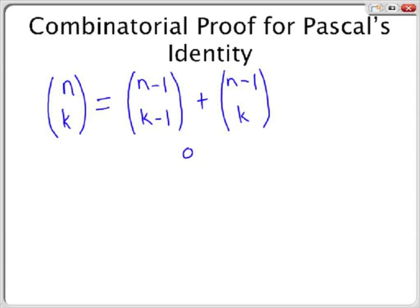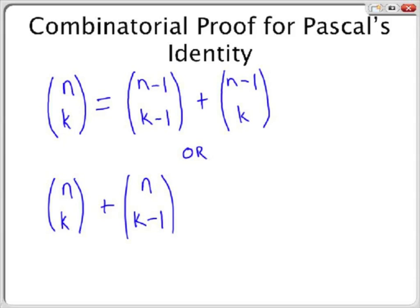Thus, we can conclude the number of ways to get a k-subset from a set containing n elements, which is n choose k, is also equal to n minus 1 choose k minus 1 plus n minus 1 choose k. This equation can be rewritten as n choose k plus n choose k minus 1 equals n plus 1 choose k, where k is less than n plus 1 and greater than 1, which is the equation for Pascal's Identity shown on the previous slide.